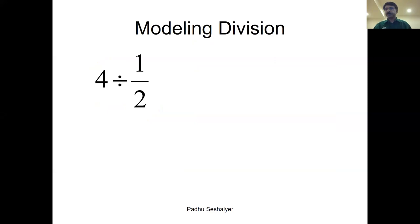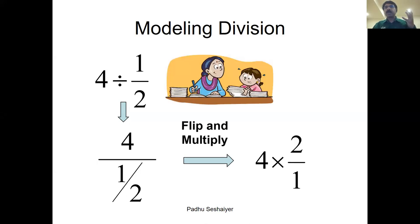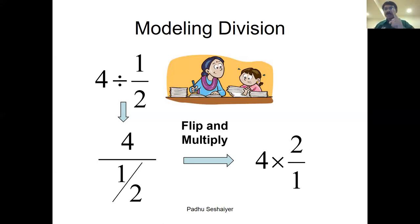Now let me take the topic of 'four divided by half.' What do we do? We say write it as a fraction, and then one of the biggest mistakes as teachers: we say 'flip and multiply.' Students never even ask why — no, it's a rule, just memorize it, it will be in the exam. But when a child asks why, it's your responsibility to explain. This generation of students is asking you why, and you need to be ready to answer.